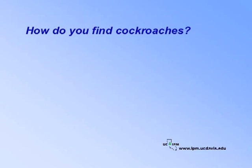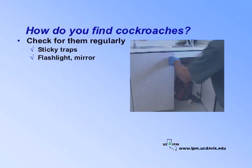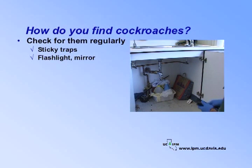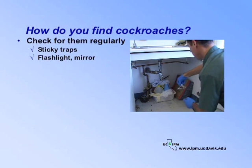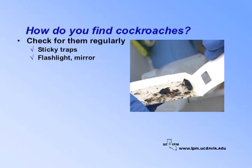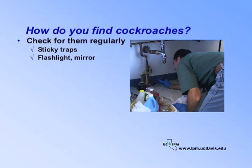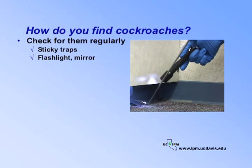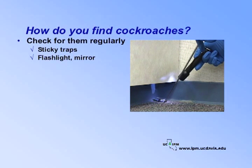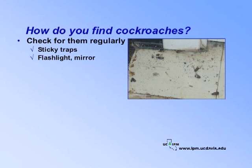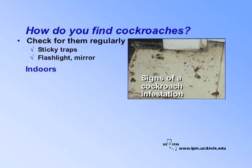To manage cockroaches, you need to find them first. If you find them early and identify them, you may be able to manage them before they become a serious problem. Develop a regular routine for checking for roaches. Sticky traps are the best detection tools indoors. Also use a flashlight to help you see in cracks, cabinets, or underneath appliances. A small mirror can be useful in hard to see areas. Look for signs of an infestation such as live and dead cockroaches, cast skins, egg capsules, and droppings.